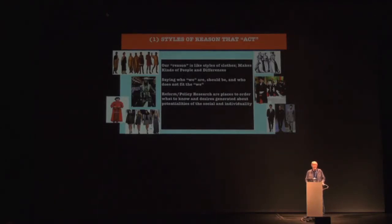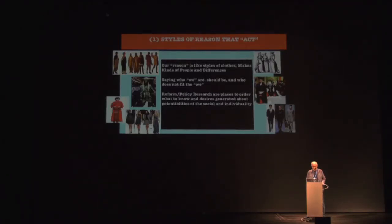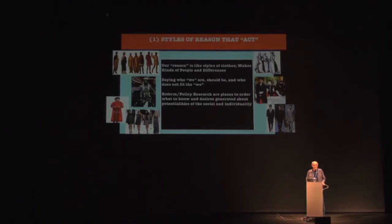I'm going to look particularly at research related to reform and policy, to understand how it orders what we know and, in that knowing, desires. I'm not talking psychologically about desires — I'm talking about how the very way we construct knowledge orients us as desires about what should be actualized. This desire has been embedded in the social sciences since the 1800s in what we call the moral sciences, which studied deviance — which gets back to the topic of inclusion and exclusion.